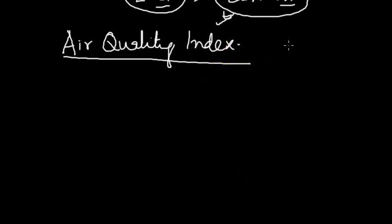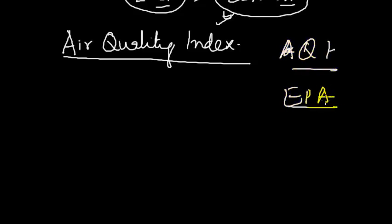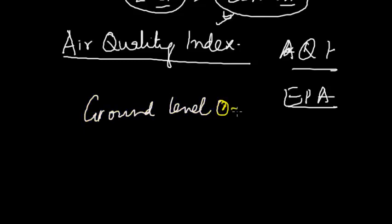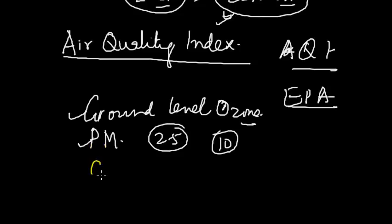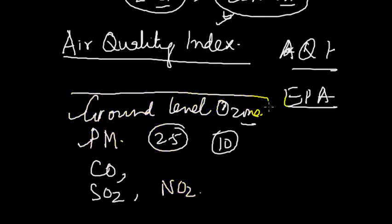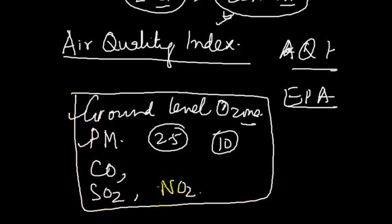The Air Quality Index (AQI) is calculated by the Environmental Protection Agency (EPA) for five major pollutants regulated by the Clean Air Act. These five are: ground-level ozone, particulate matter (PM2.5 is more dangerous than PM10), carbon monoxide, sulfur dioxide, and nitrogen dioxide. The concentration of these five decides the AQI.